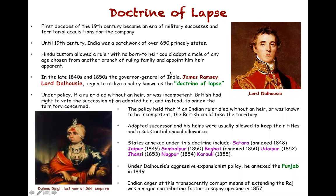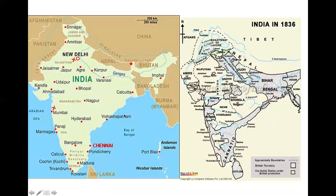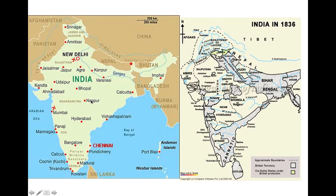The policy of the Doctrine of Lapse, in no small way, led to the Sepoy uprising of 1857. Here are some maps giving an idea of where some of these princely states that were annexed under the Doctrine of Lapse are located — Udaipur, Jaipur, Satara located here, Sambalpur in the western Bengal region, Nagpur, and several other princely states that were annexed as well.